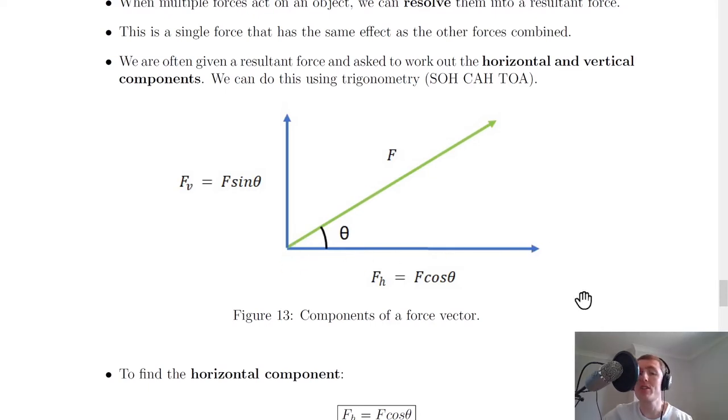Using SOHCAHTOA, we can show that this side is F cos θ and this side is F sin θ. We use sin θ equals opposite over hypotenuse to get this component, and cos θ equals adjacent over hypotenuse to get this side.